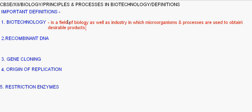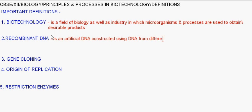Recombinant DNA is an artificial DNA constructed using DNA from different sources — that is, foreign desirable DNA plus host DNA.